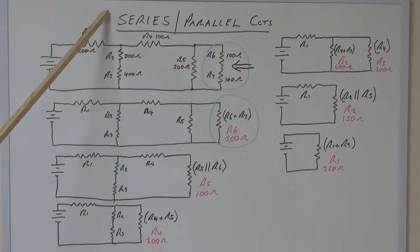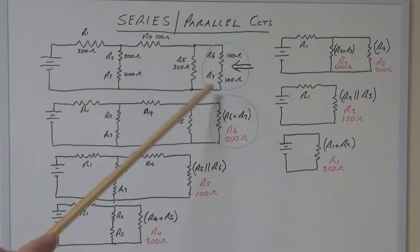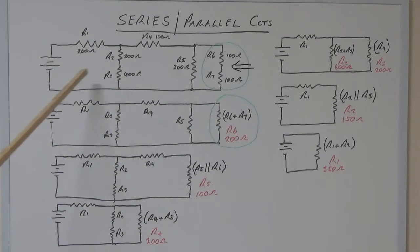Continuing on with our series parallel circuit combinations, we're going to have a look at a bit more of a complex circuit. As you can see here, we've got a power supply and a range of resistors in various orders.